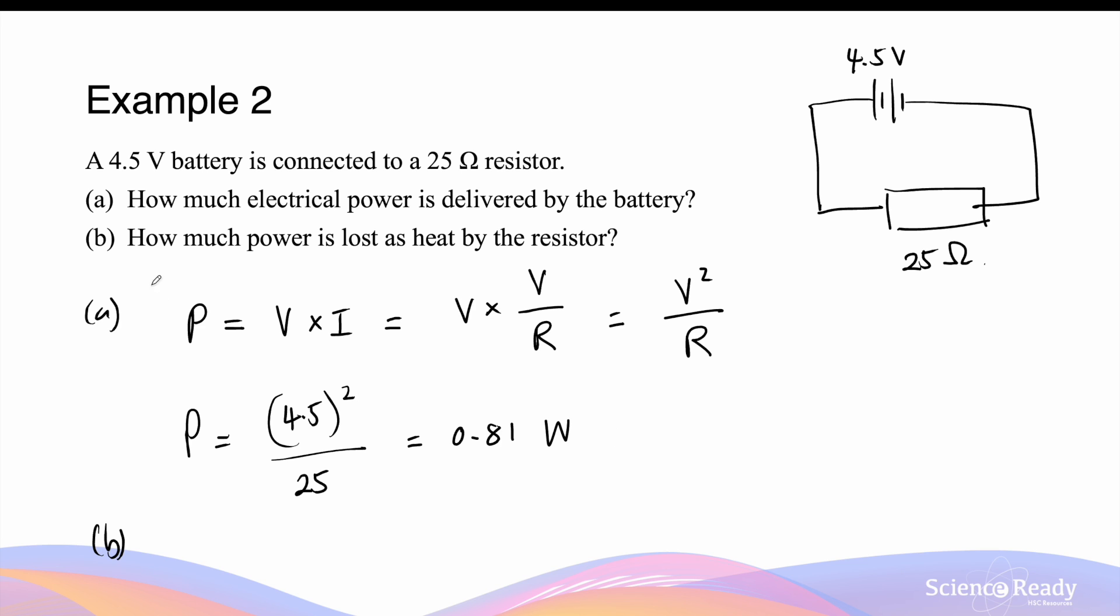For part B, how much power is lost as heat by the resistor? Now, as we said, when the electrical power does work on the charges or the current as it passes through the resistor, the electrical energy is transformed into heat, which is called resistive heat production. By the law of conservation of energy, we know that energy here cannot be destroyed nor created. So the amount of power that's lost as heat will be equal to the power delivered by the battery, which will be also 0.81 watts.